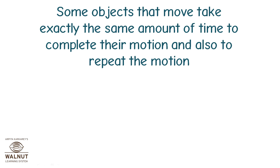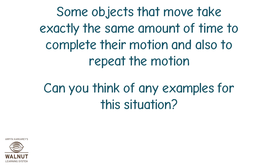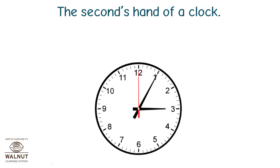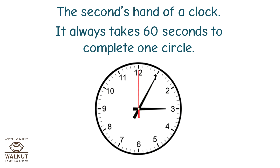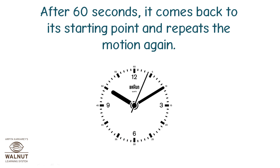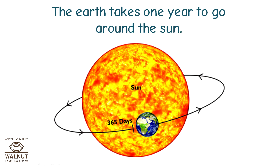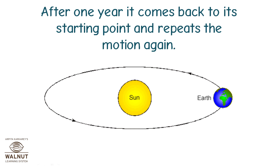Some objects that move take exactly the same amount of time to complete their motion and also to repeat the motion. Can you think of any examples? The seconds hand of a clock — it always takes 60 seconds to complete one circle. After 60 seconds, it comes back to its starting point and repeats the motion again. The Earth takes one year to go around the sun; after one year, it comes back to its starting point and repeats the motion again.